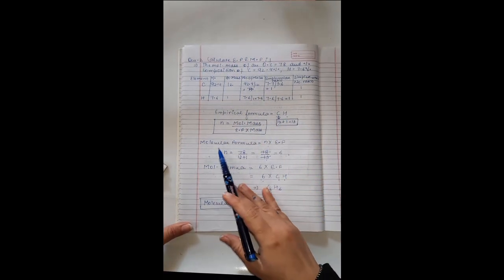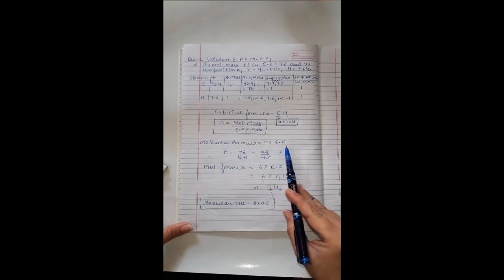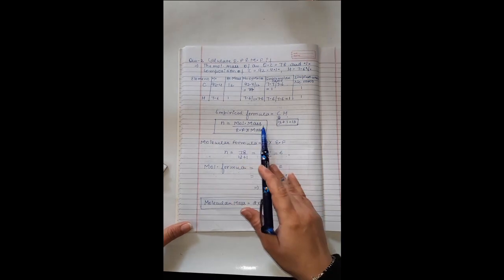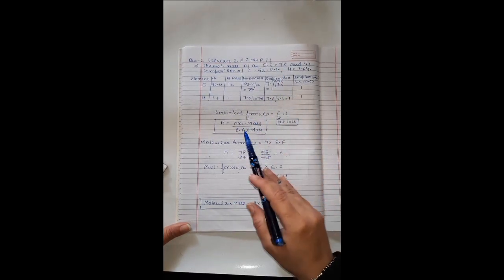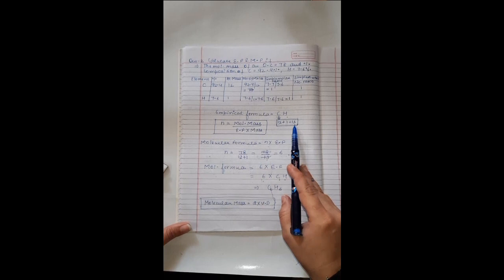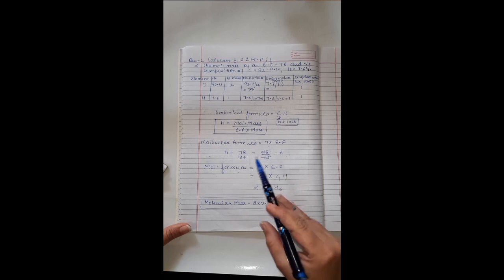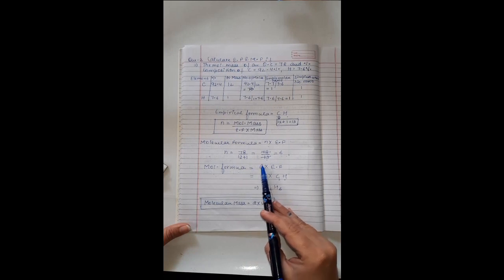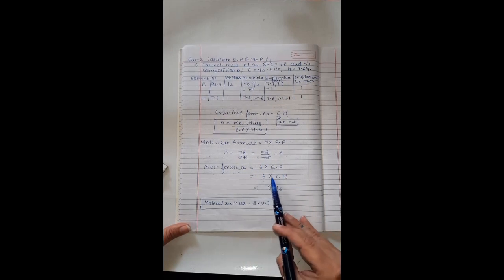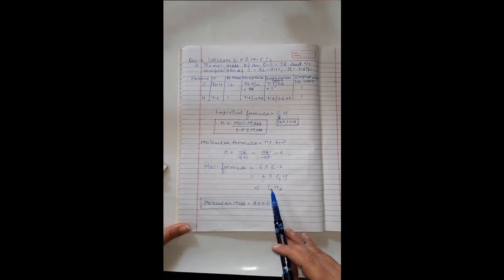To calculate molecular formula, we use: molecular formula = N × empirical formula, where N equals molecular mass divided by empirical formula mass. Molecular mass is 78 and empirical formula mass of CH is 13. So N equals 78 divided by 13, which is 6. Therefore, molecular formula equals 6 × CH, which is C₆H₆.